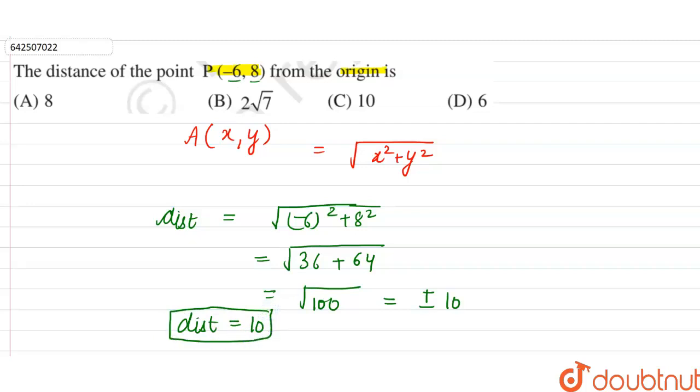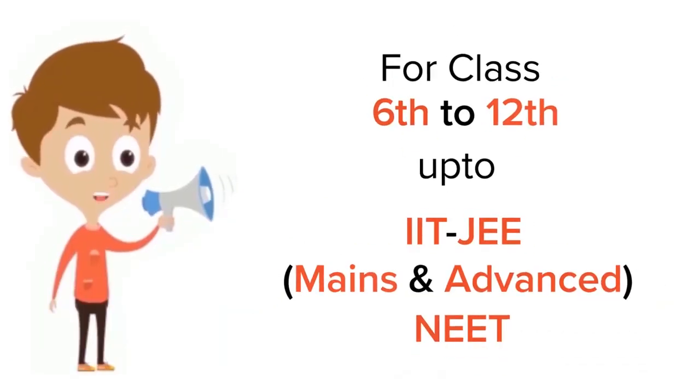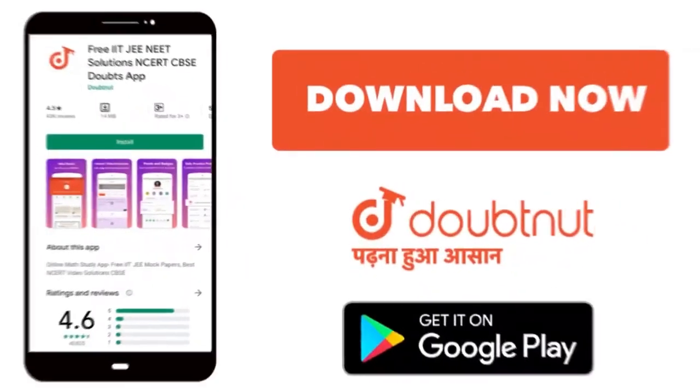Now from options we can say that the correct option is option C. For class 6 to 12th, IIT-JEE, and NEET level, trusted by more than 5 crore students. Download Doubtnut app today.